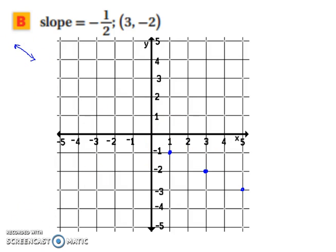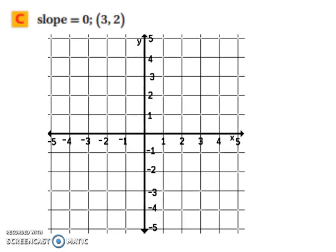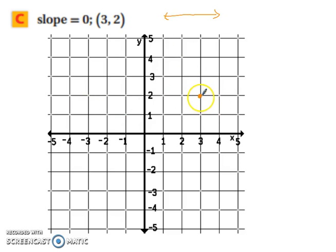Now simply connect the points with a line. Now try this one. So let's plot the point (3, 2) and our slope is 0. If there's a slope of 0, what kind of line are you going to have? A horizontal line. So you have a horizontal line through the point (3, 2).